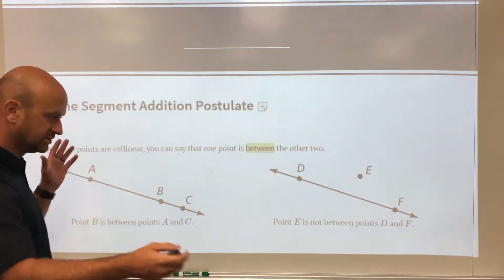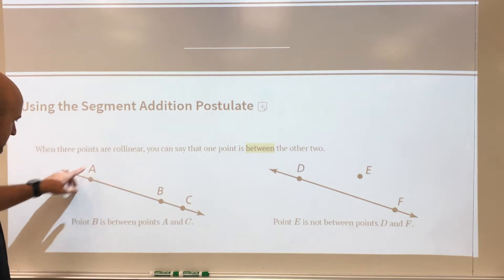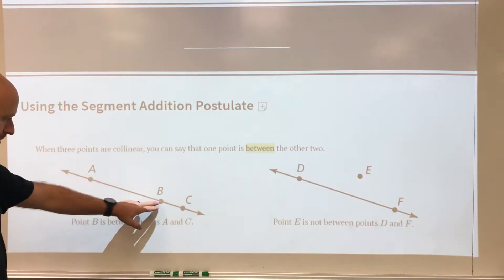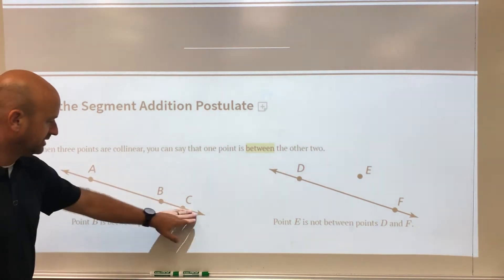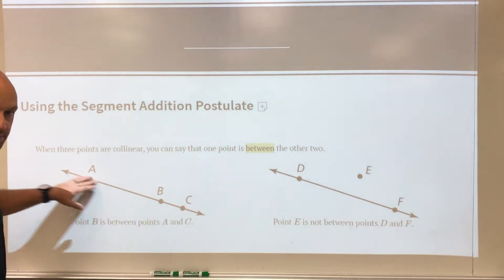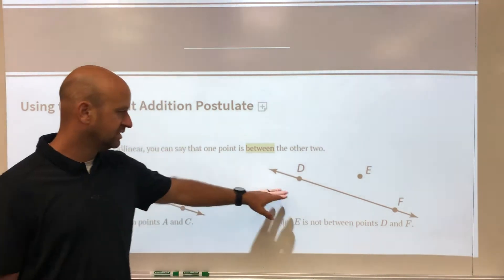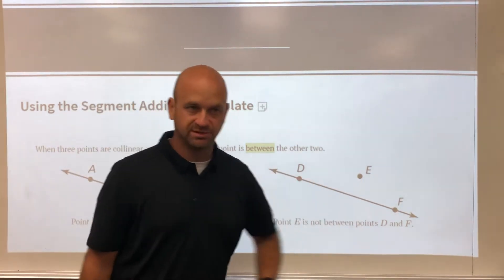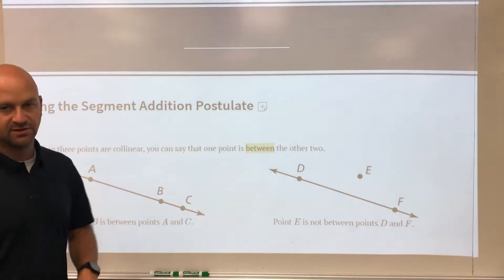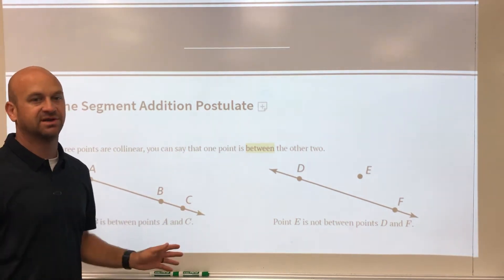One thing to understand is that when the points are collinear, point B is between A and C. Point B is on the same segment as segment AC, whereas in this example they're showing you that point E is not in between the segment D and F. So first we need to make sure that the points are on the actual segment.